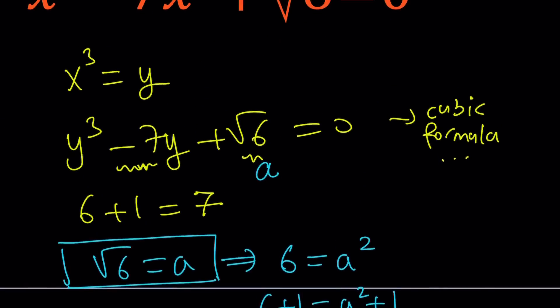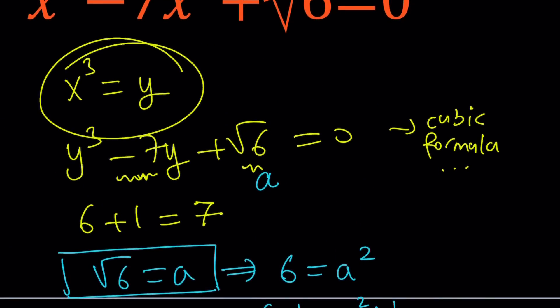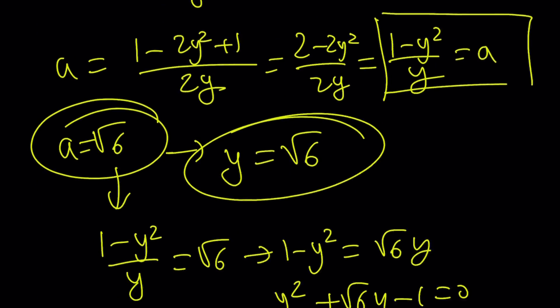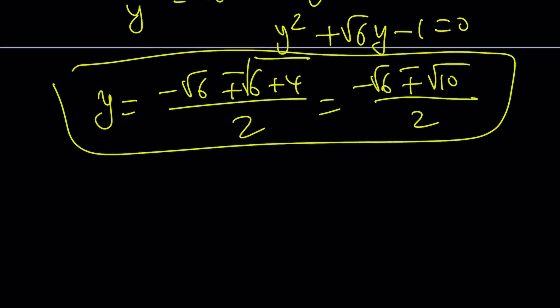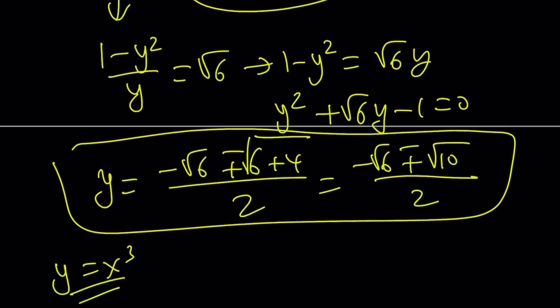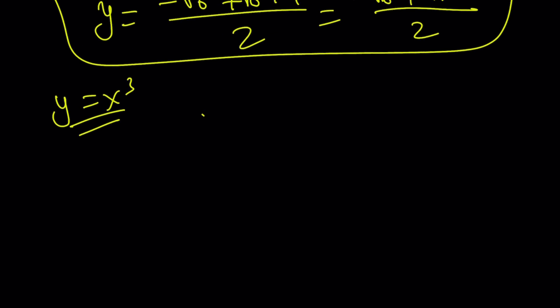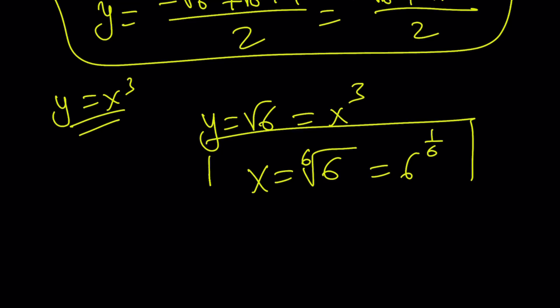What is Y? Y is X cubed. Yeah, it's not super bad. Y is X cubed. Let's go ahead and back substitute. Y is X cubed. Don't forget that. So we got Y equals square root of 6. Y equals square root of 6 equals X cubed. X is equal to the cube root of square root of 6, which is the sixth root of 6, or 6 to the power 1 over 6. That's one of the solutions.